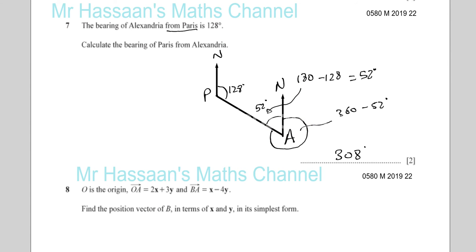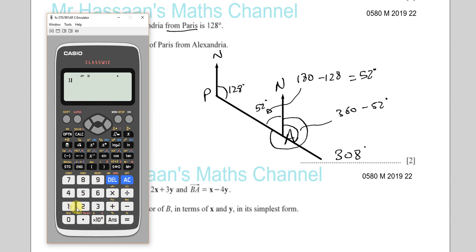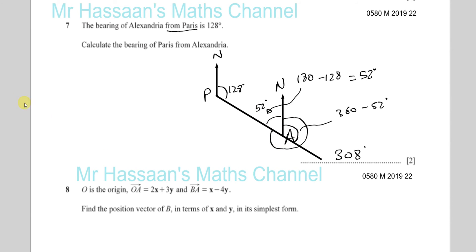Now, another way we could have done it is we could have taken this line that we already drew here and extended it further, in which case these two angles would be the same. So you'd have this angle being 128. And 128 plus 180 should give us the same value, which is 308 degrees. So that's another way you could do it. There's two ways of answering that question.